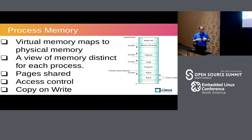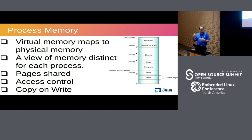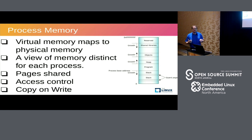Copy-on-write happens frequently — for example, when a process forks and creates another copy of itself. The copy isn't really made; instead, a new page table is set up for the new process, and all mappings are set read-only. The new process runs, and as soon as it tries to write to something, the kernel provides additional memory. This follows the concept of on-demand memory, which minimizes the amount of memory your process actually uses and allows you to run much more on a system.